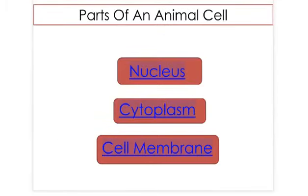Both animal and plant cells have many parts, or as scientists call them, organelles. Here you can see some examples. Let's look at some of these organelles in more detail.